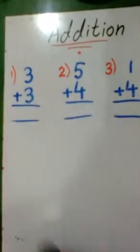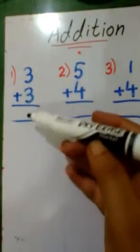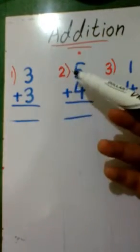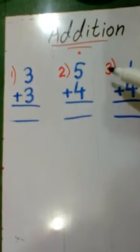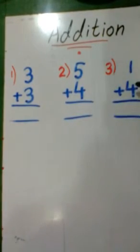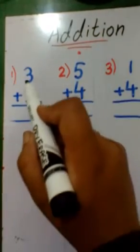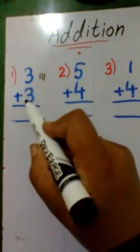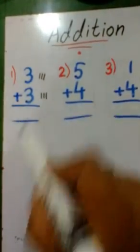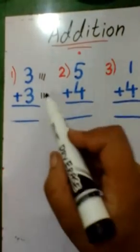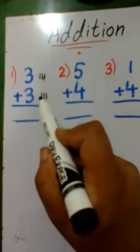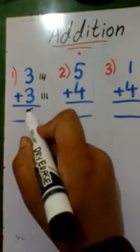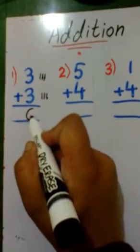All students must solve 3 questions in the notebook. Q1: 3 plus 3. Q2: 5 plus 4. Q3: 1 plus 4. For Q1, since the first number is 3, we draw 3 lines, and since the second number is also 3, we draw 3 more lines below. Counting all: 1, 2, 3, 4, 5, 6. 3 plus 3 is equal to 6.